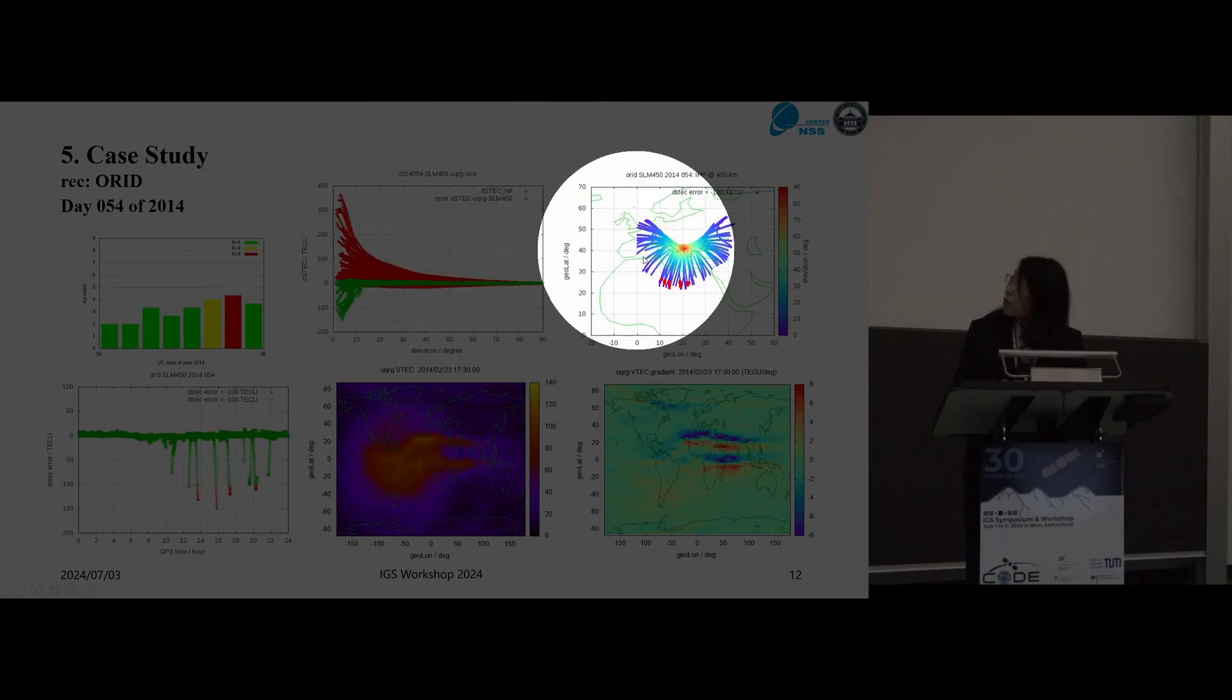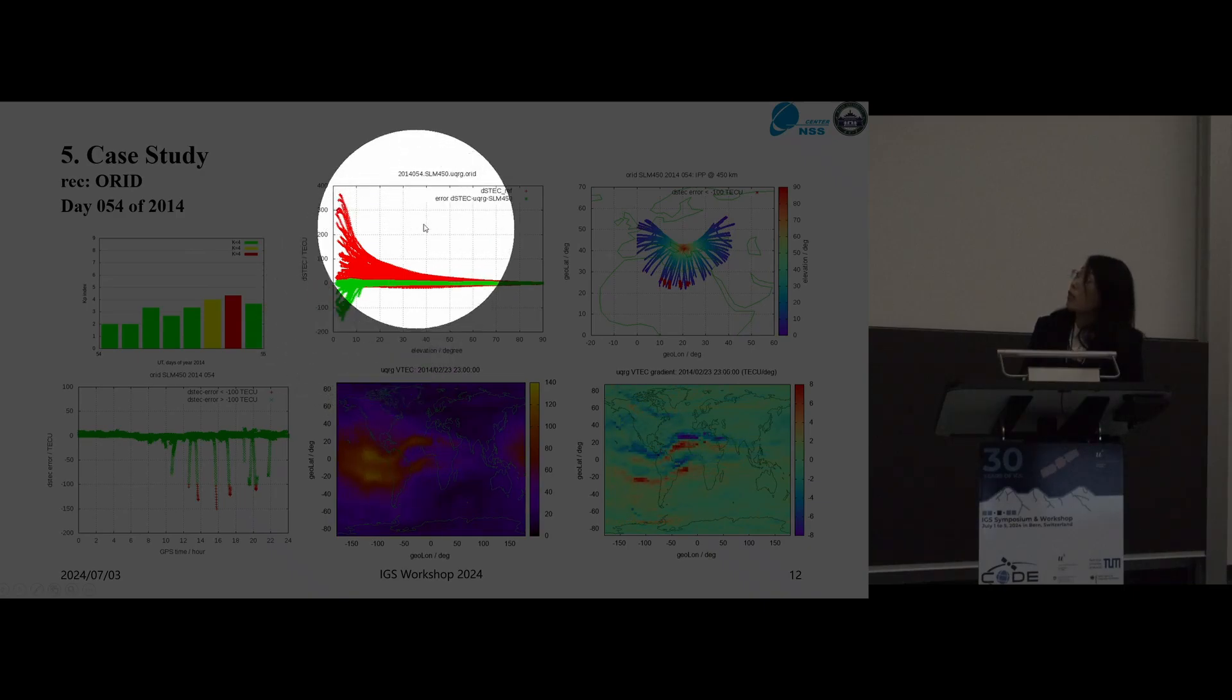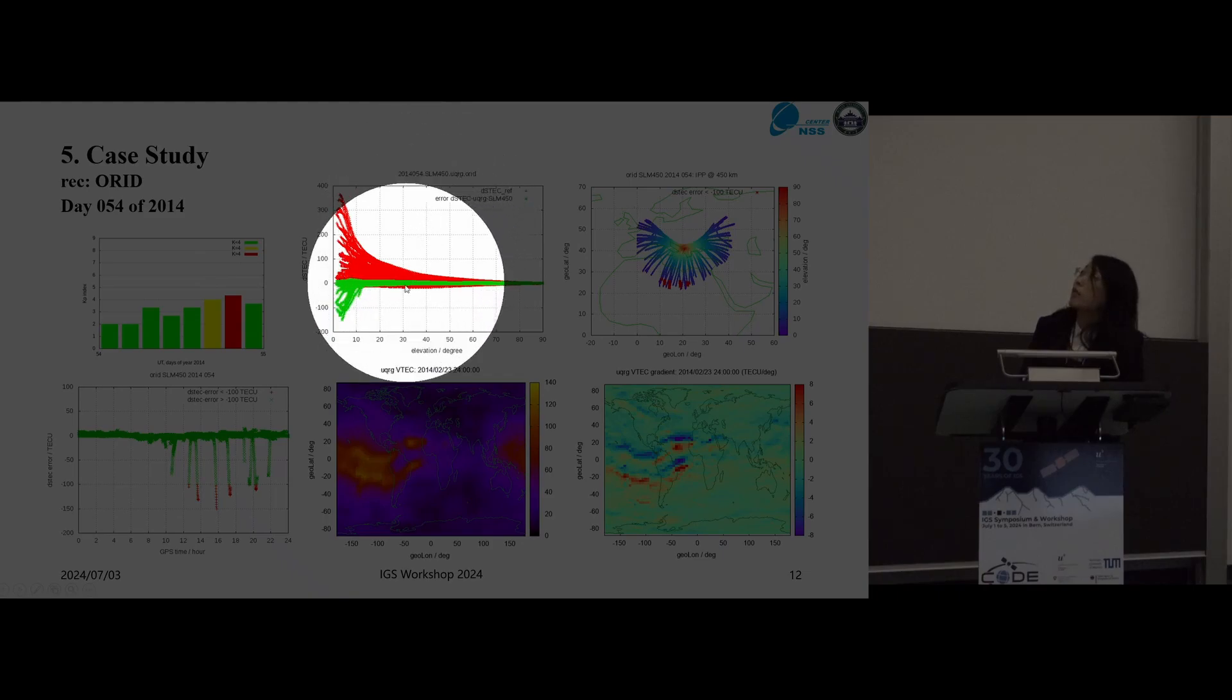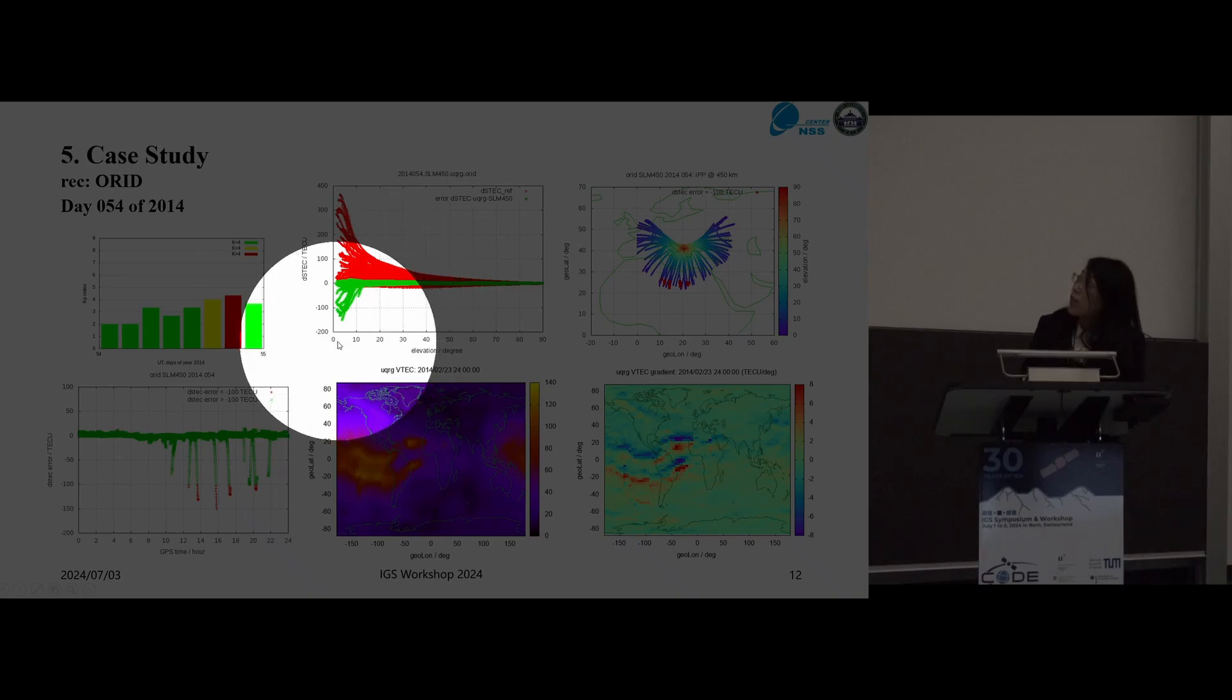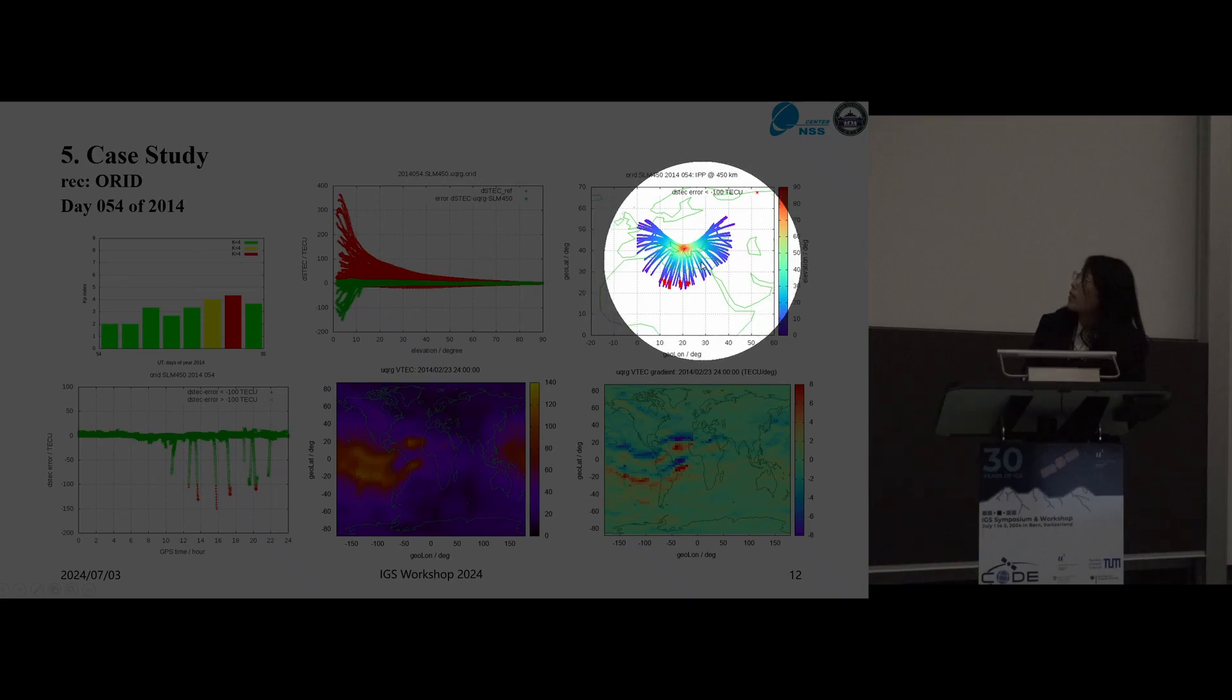In the upper-middle panel, we show that the red points represent the DSTEC truths, and the green points represent the DSTEC error with this single-layer model. We can see the large DSTEC errors occurring in the low elevation. And some of the errors are larger than 10 TECU. When we look at the satellite elevation distribution, we can find that the red points refer to the DSTEC errors larger than 10 TECU. We can find those errors correspond to the satellites sourcing the equator.